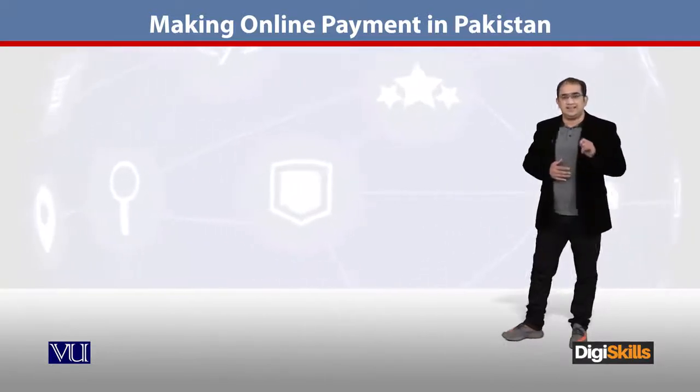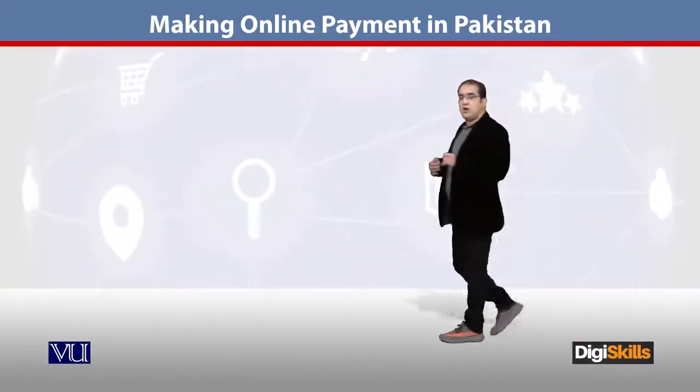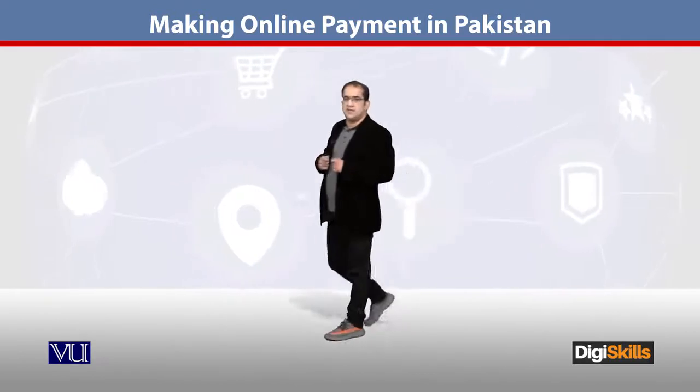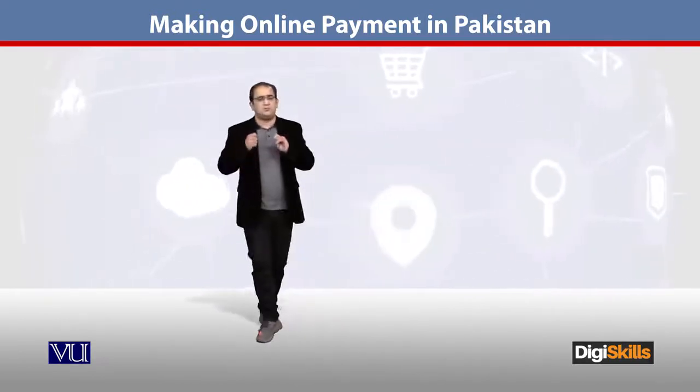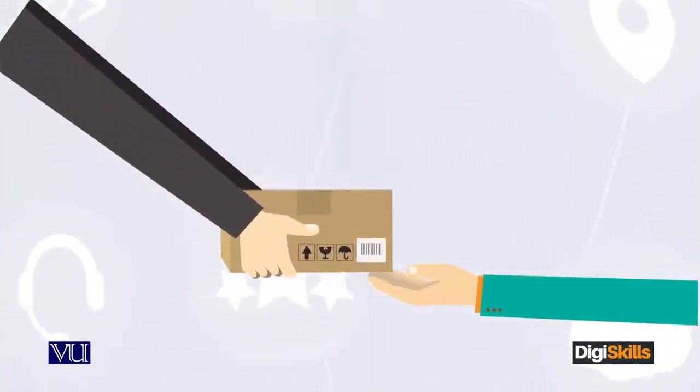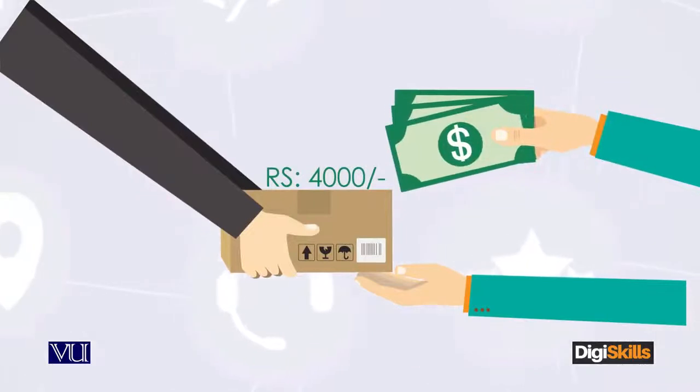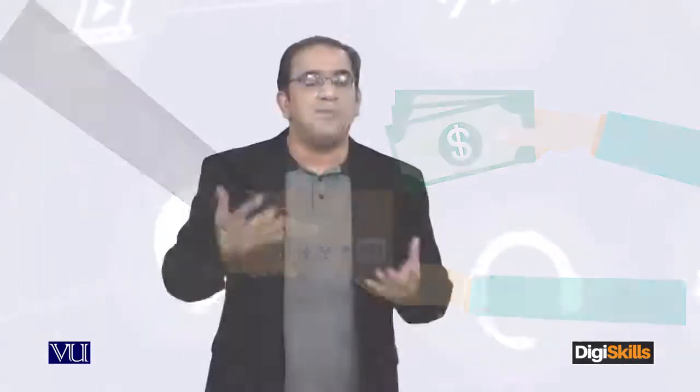But this means that we can receive online payment. For example, as we speak, cash on delivery is the major source of receiving online payment. Online payment means that if we are doing online shopping, then the payment is done physically.